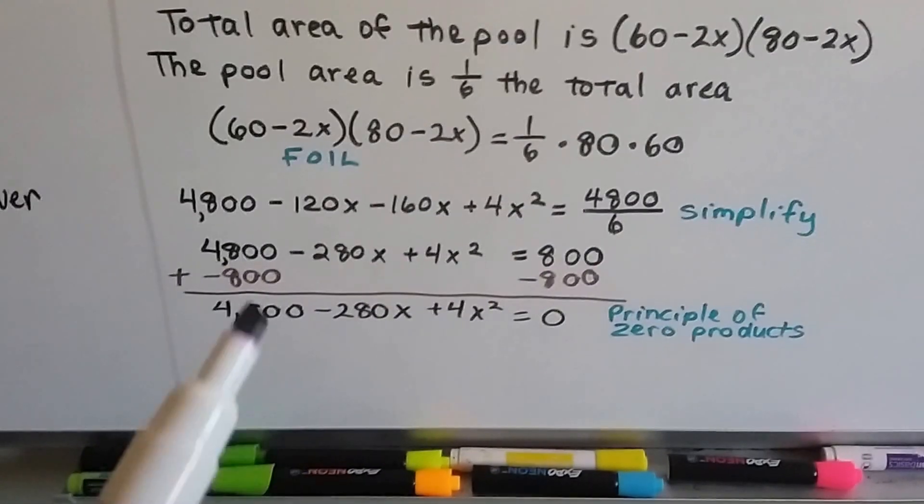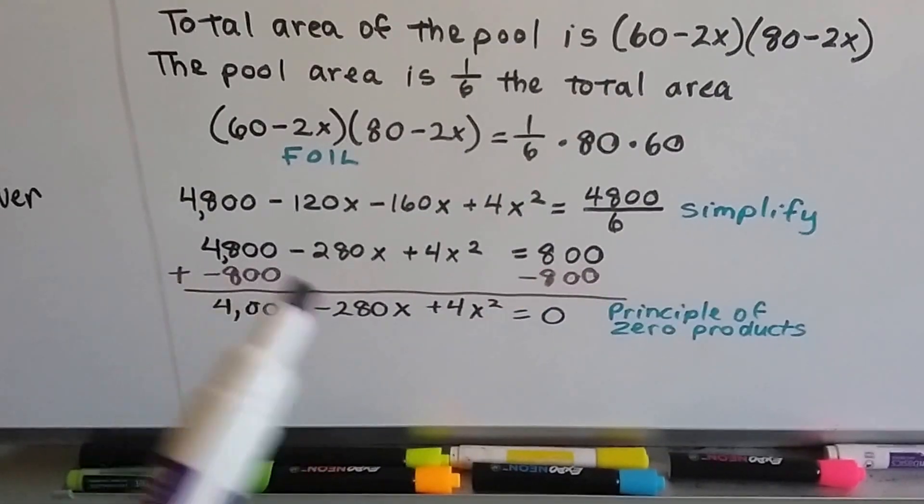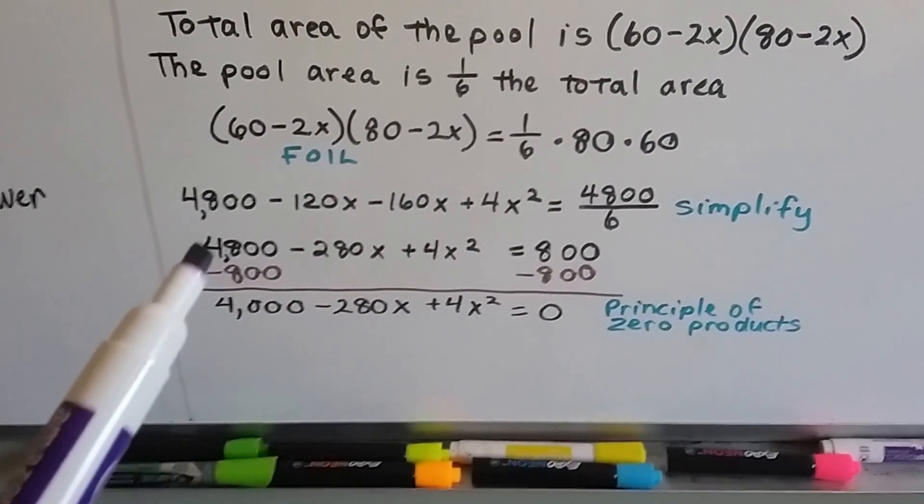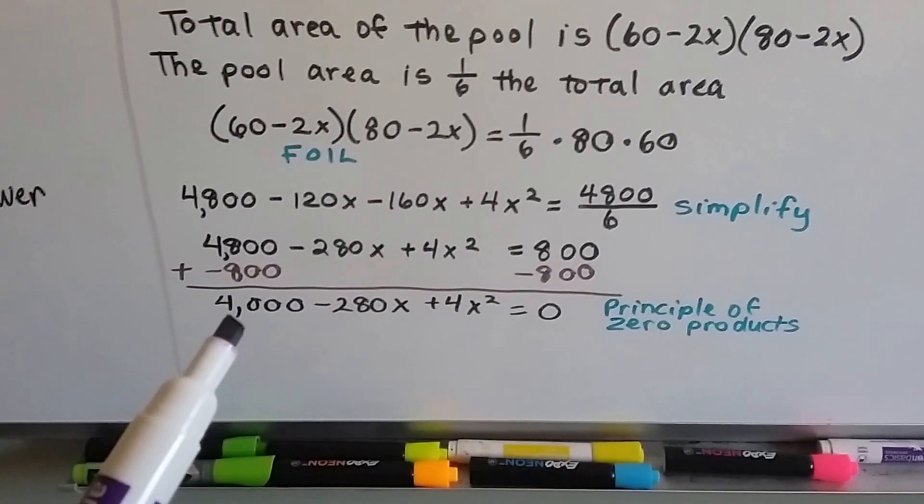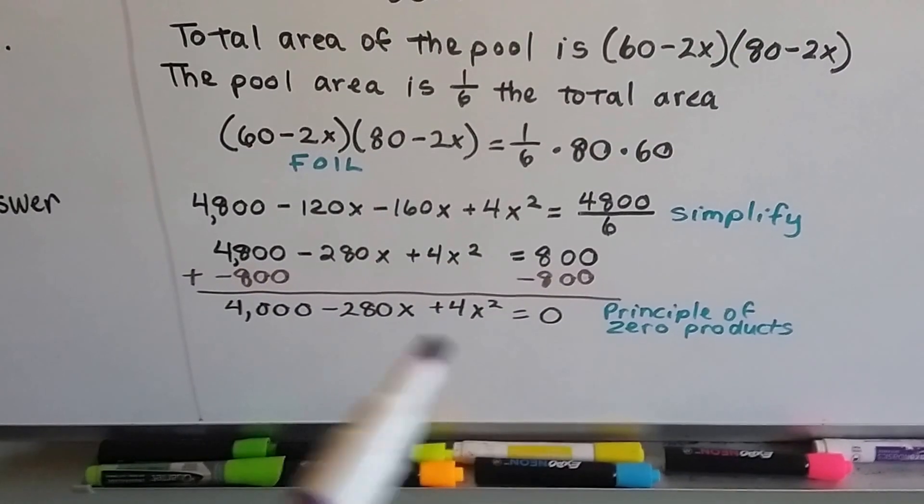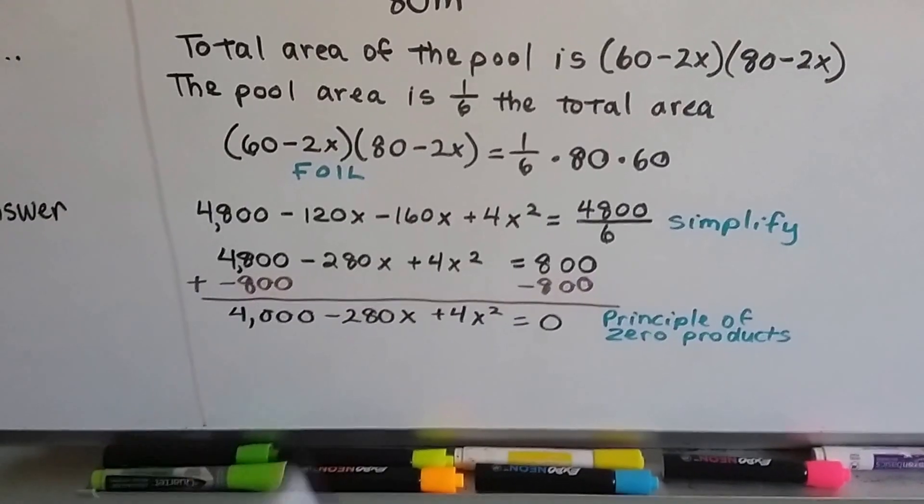Now, using the principle of zero products, we can add negative 800 to each side of the equation to set this to equal zero. So this 4800 is going to become 4000. But it's not written in the standard form of a quadratic equation. We need to rearrange this.